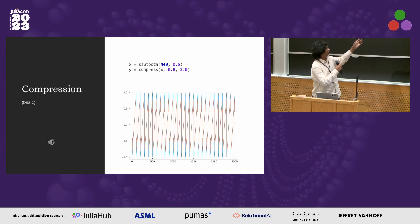Compression, this is very basic compression, but essentially any sound, any value over a certain amplitude threshold gets scaled down by the ratio, here is two. So anything above that will just get clipped slightly.